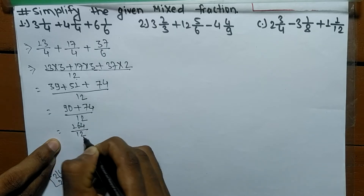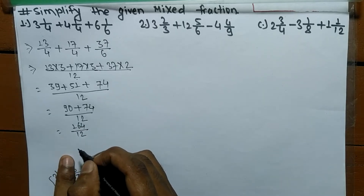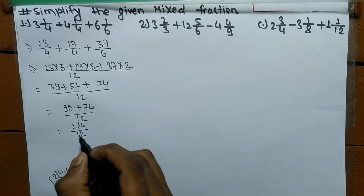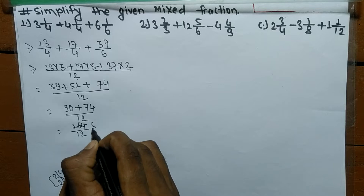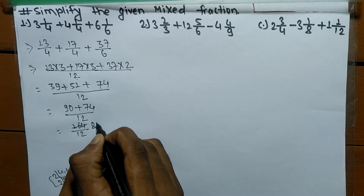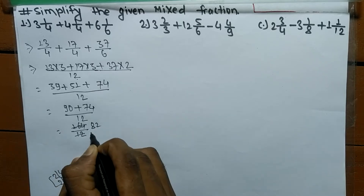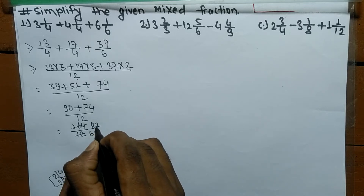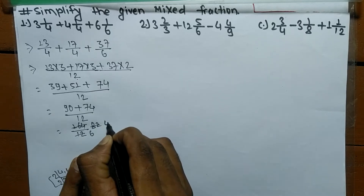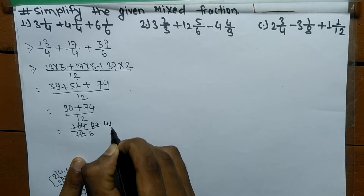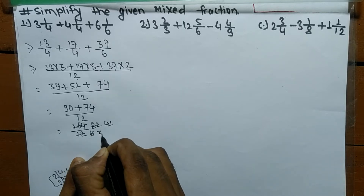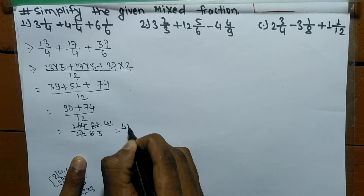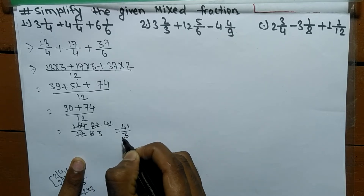Now we have to check whether these numbers can be cancelled or not. These can be cancelled by 2, giving 2 times 8 means 16 and 2 times 6 means 12, which can be again cancelled by 2, giving 2 times 4 means 8 and 2 times 3 means 6. So we got 41 by 3.